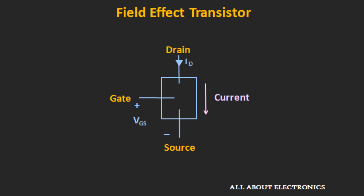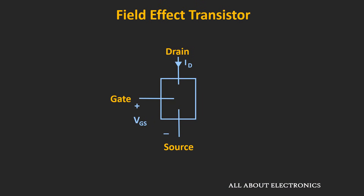This applied voltage generates the electric field within the device. And by controlling this electric field, or in a way by controlling this voltage, we can control the flow of current through the device. So basically, in this field effect transistor, by controlling the electric field we can control the flow of current, and that is why it is known as the field effect transistor.